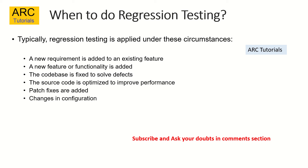Regression testing is typically applied under these circumstances: whenever a new requirement or new feature or functionality is added, you have to do regression testing. Whenever you have fixed defects — for example, if there is a critical workflow like order management and you are fixing defects in it, you must test the entire workflow together. Also, once the product is released, if you do product fixes to improve performance, security, or scalability, you have to consider regression testing. Finally, whenever there are changes in patches or configuration changes, you definitely have to do regression testing.